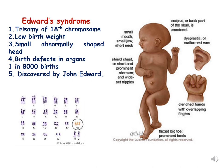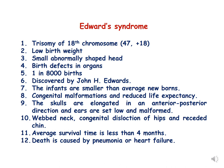Edwards syndrome is represented by trisomy of the 18th chromosome. These children have low birth weight, a small abnormally shaped head (microcephalic condition), and birth defects in organs. The frequency is 1 in 8000 births, and it was discovered by John Edwards. The limbs are smaller than average, the skull is elongated in an anterior-posterior direction, and there is webbing of the neck. Average survival time is less than 4 months, caused by pneumonia or heart failure.